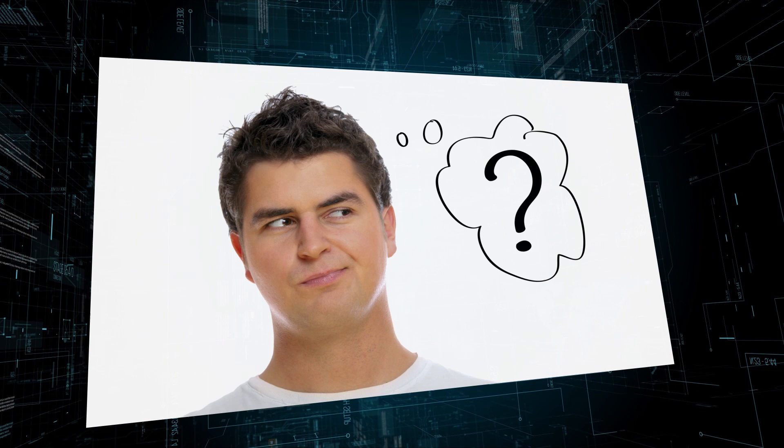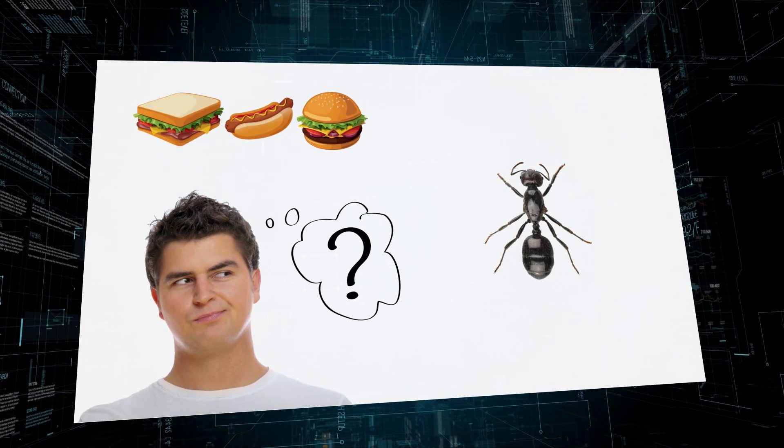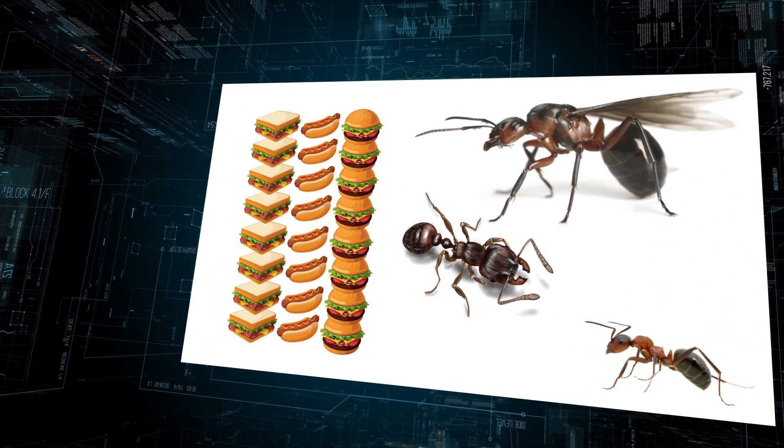Think about that for a moment. How is that even possible? More food to make a bigger ant is understandable, but how does more of the same food create ants with different functions?